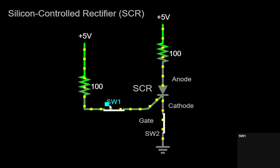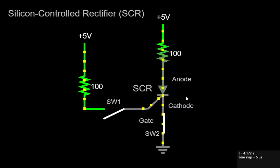Once triggered, the SCR remains conducting, even if the gate voltage is removed. You might wonder why the SCR continues to conduct even after the gate voltage is eliminated. This unique behavior is attributed to a phenomenon known as latching.